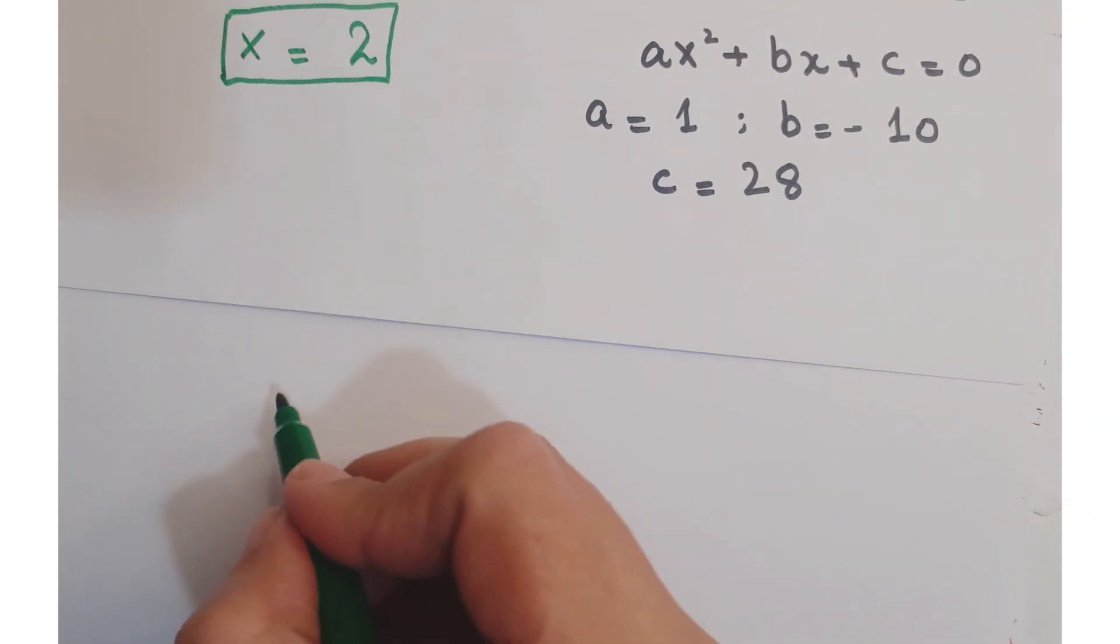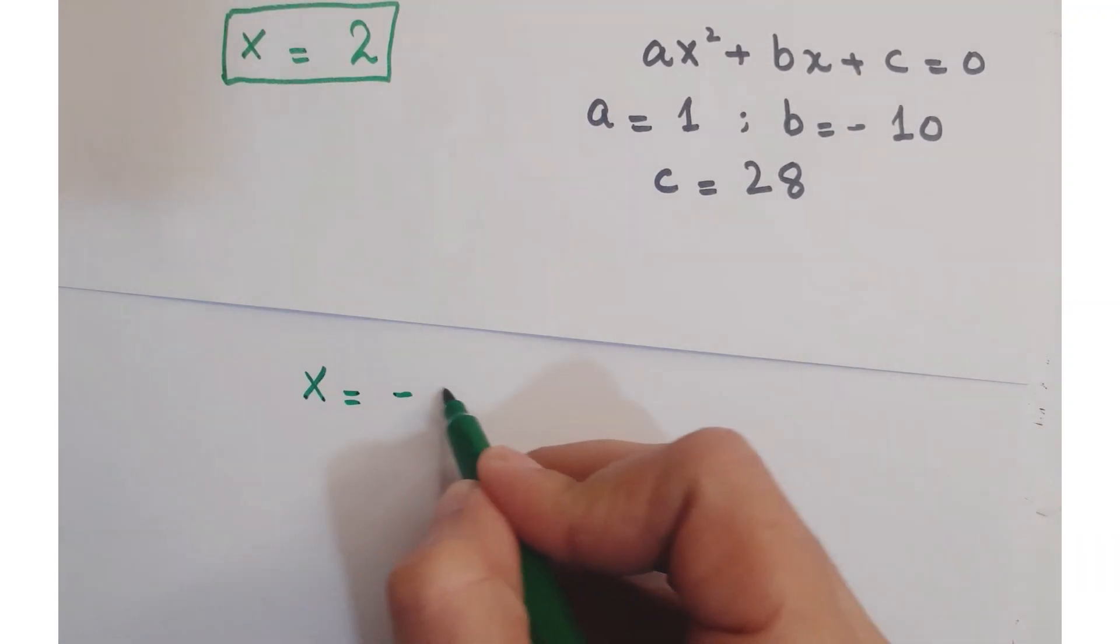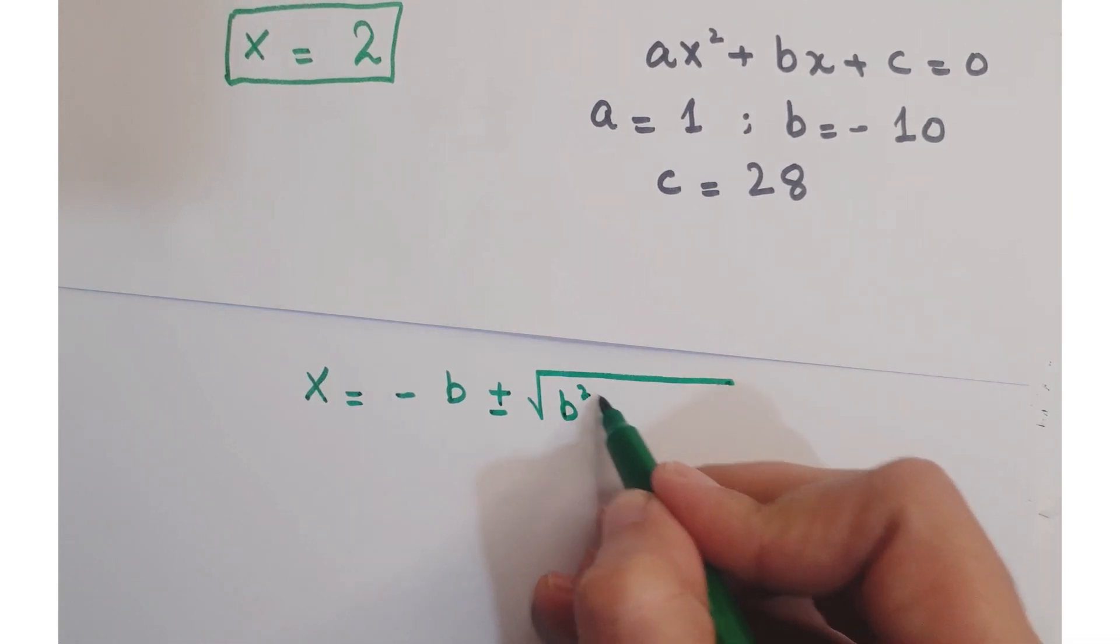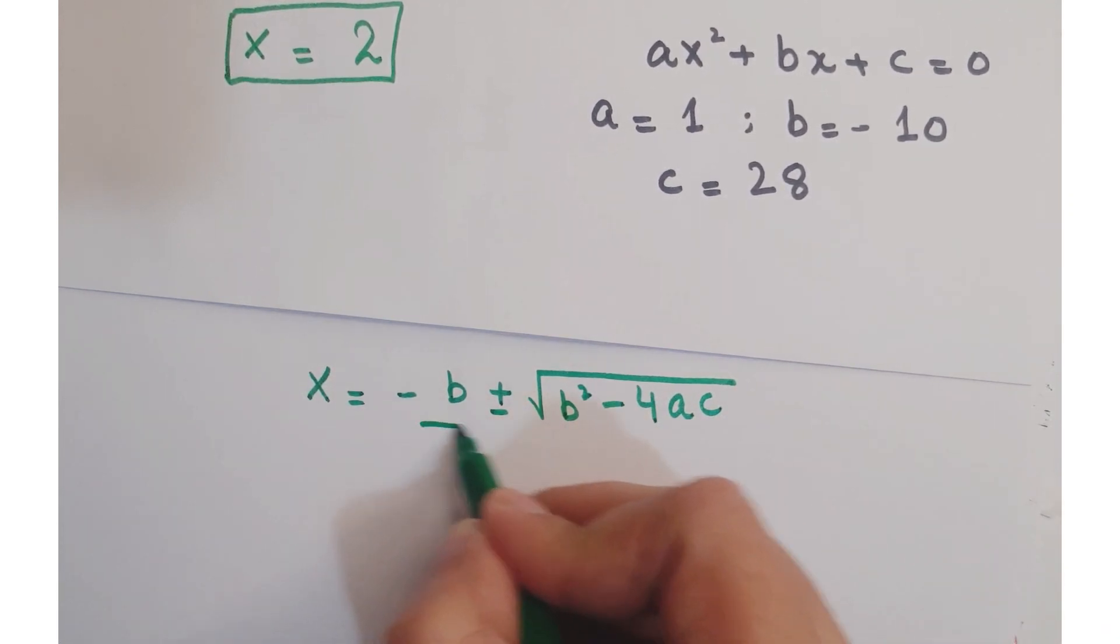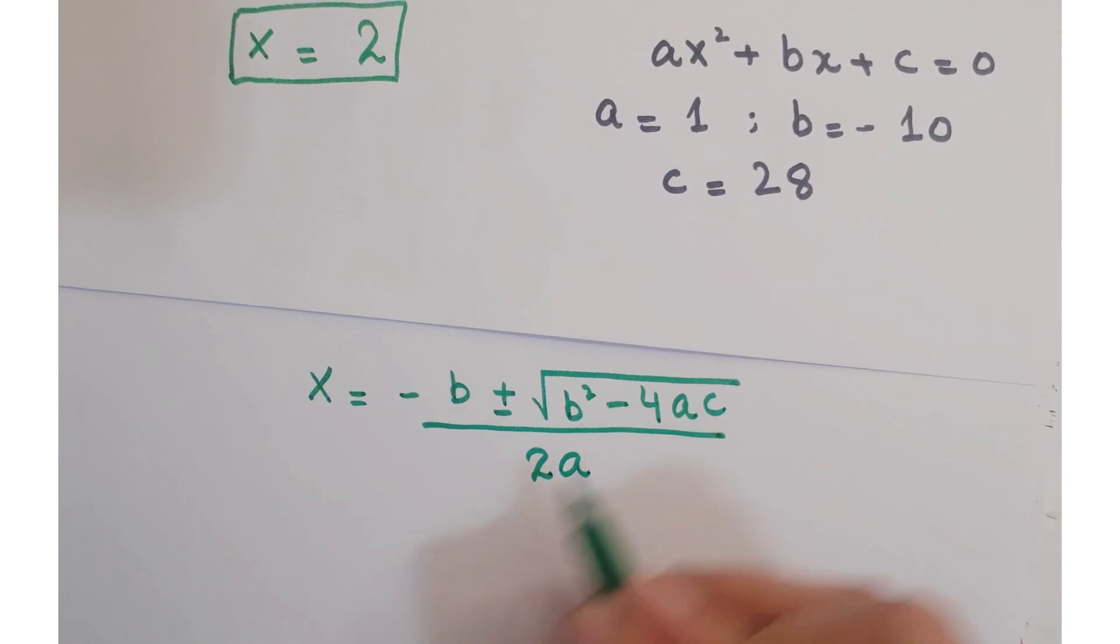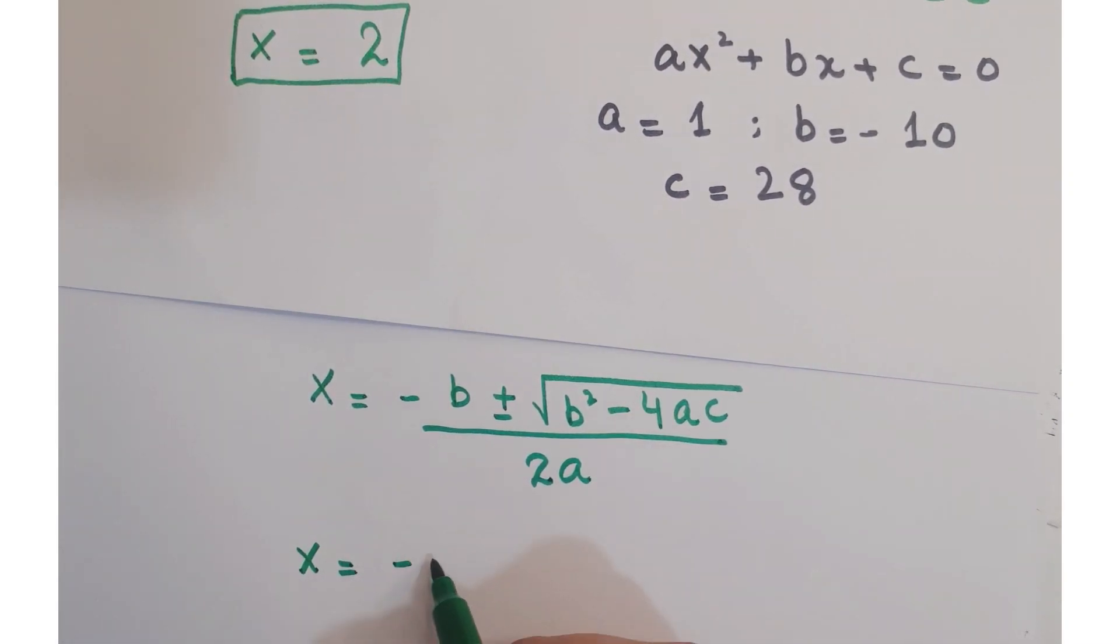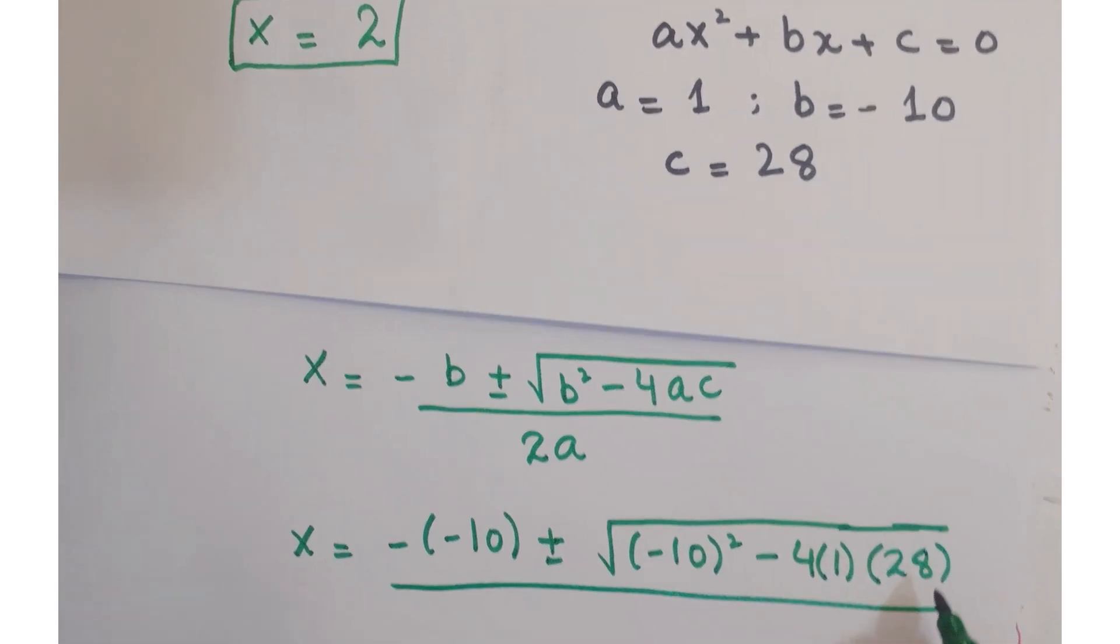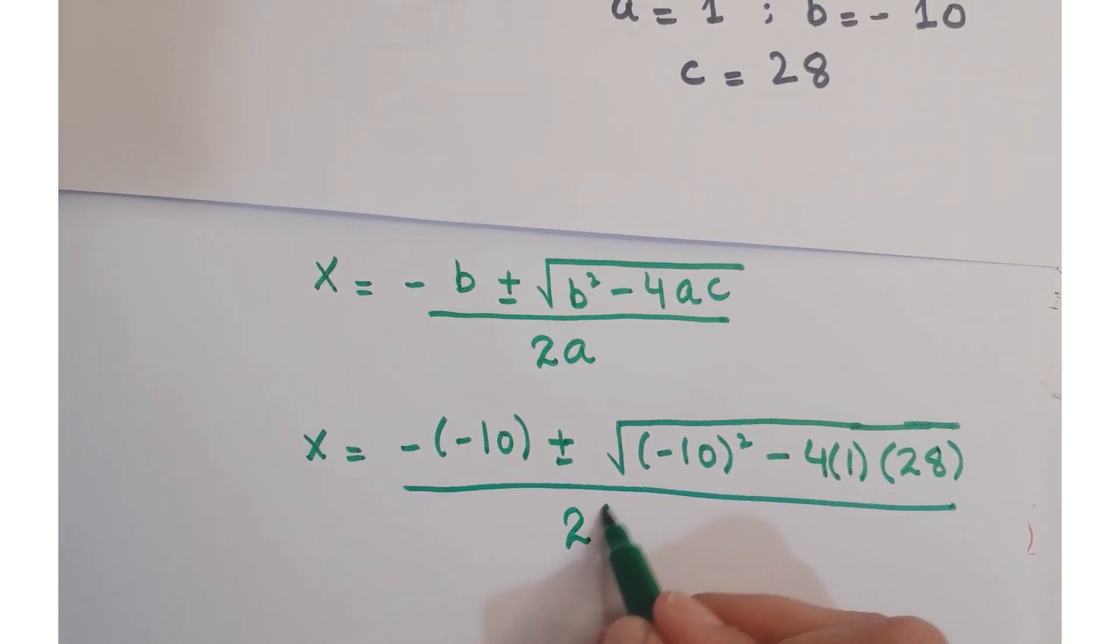Putting these values in the quadratic formula, that is x equals minus b plus minus under root b square minus 4ac upon 2a. So we have minus 10 plus minus 10 square minus 4 times 1 times 28 upon 2 times 1.